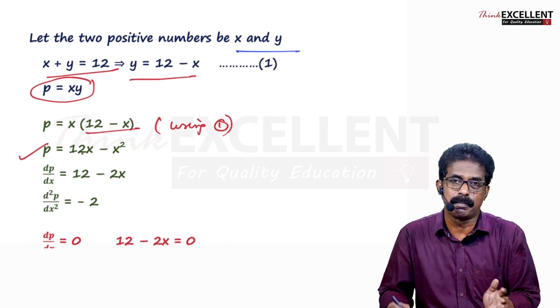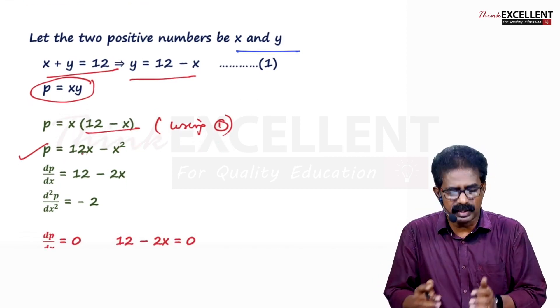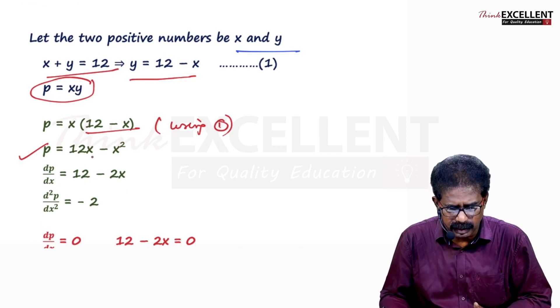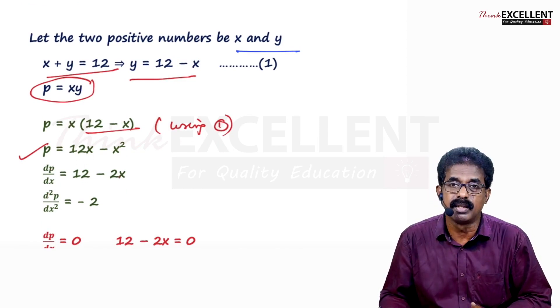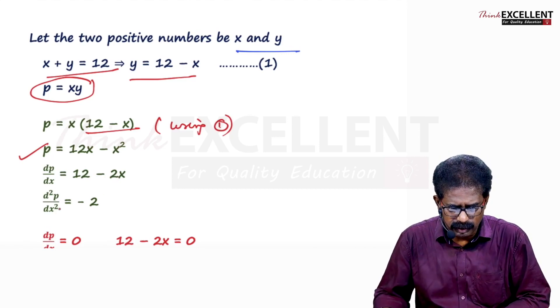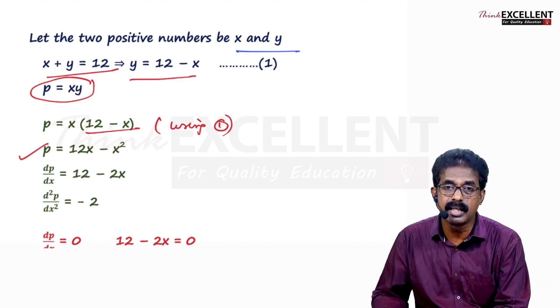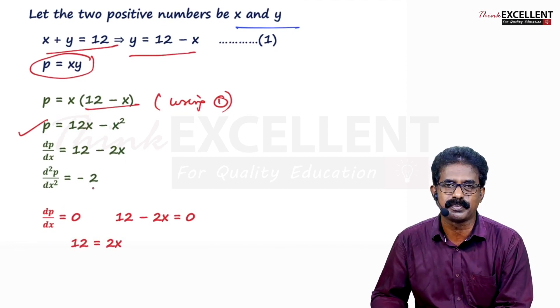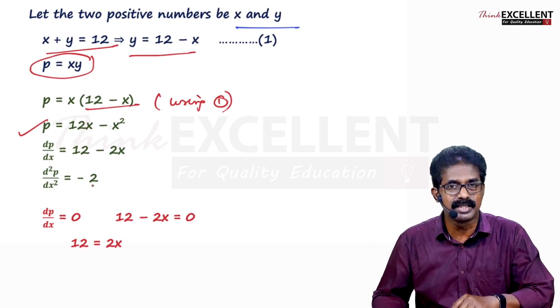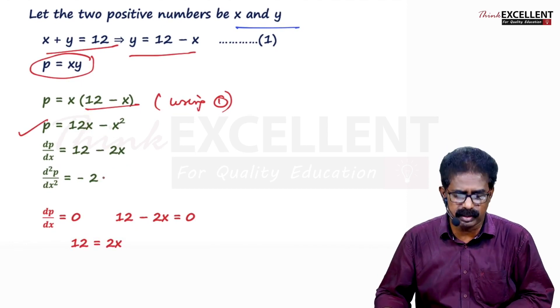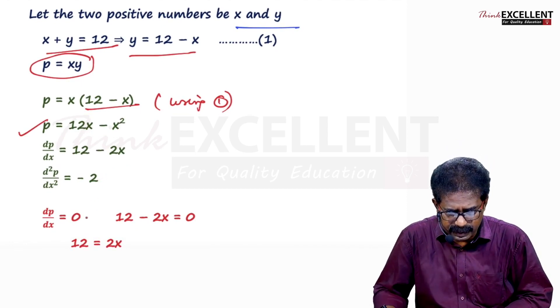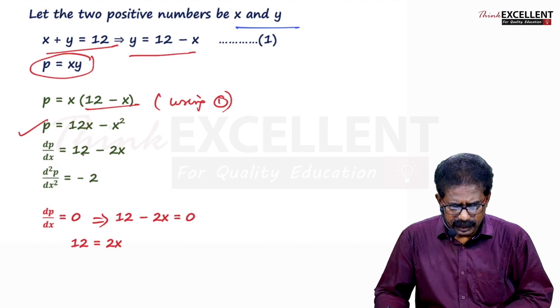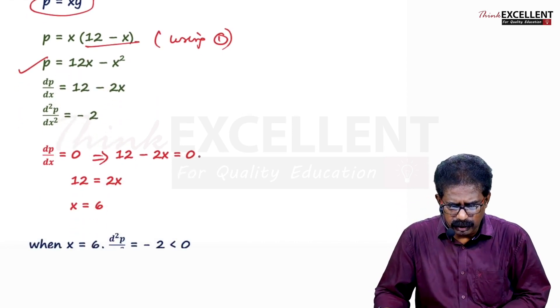P is a function of X. So differentiate 2 times. You find dP by dX. Very simple calculation. 12X derivative 12 minus X square derivative 2X. Second derivative d square P by dX square. 12 derivative 0 minus 2X derivative minus 2. Now to find stationary point, equate the first derivative with 0. dP by dX equal to 0 implies 12 minus 2X equals 0.